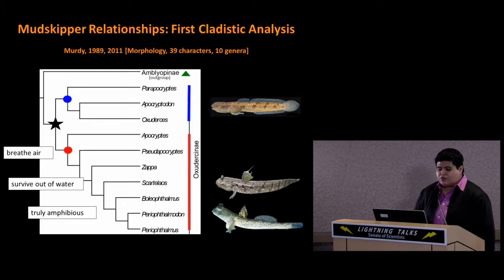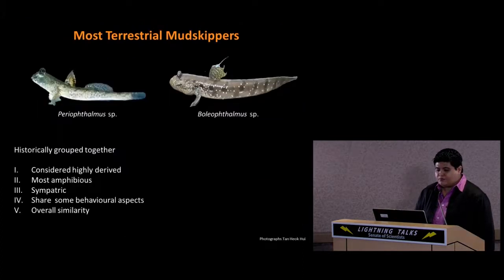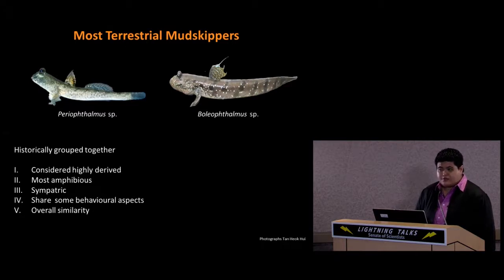Murdy hypothesized that terrestriality only occurred once within the mudskippers. He used several life history characters to resolve the relationships between the terrestrial mudskippers, such as the ability to breathe air, to survive out of water, and being truly amphibious.